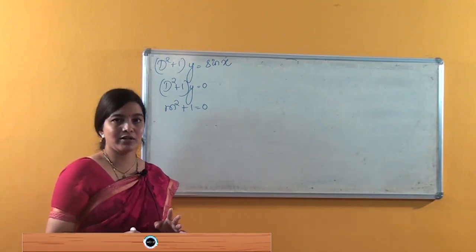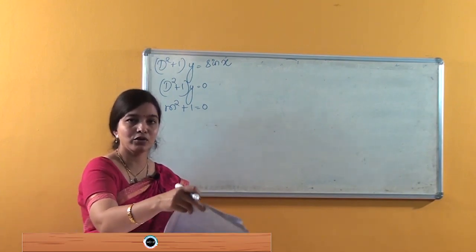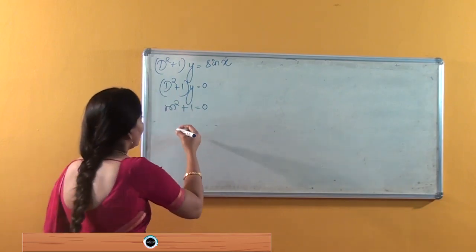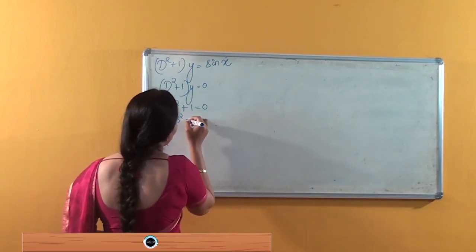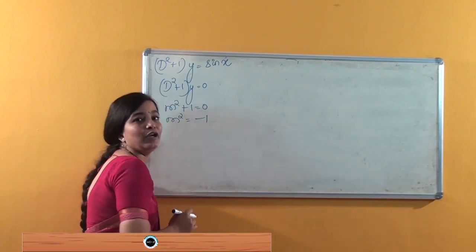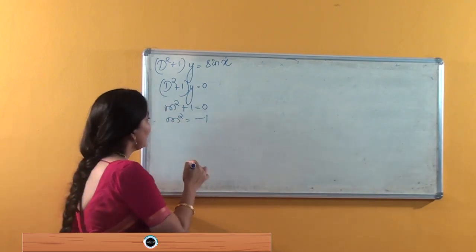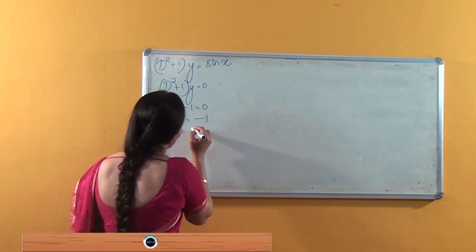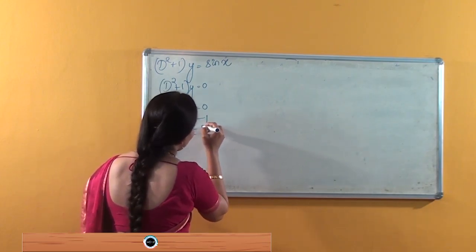Here m² + 1 = 0, so we need to find the roots. Clearly, m² = −1, and we get imaginary roots — that is, m = ±i.